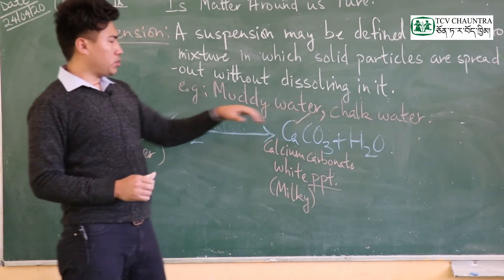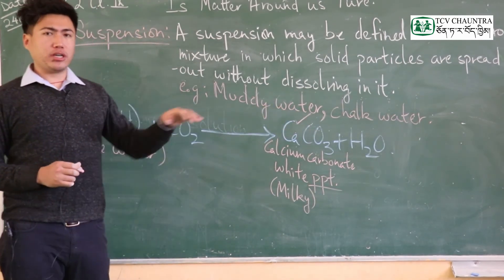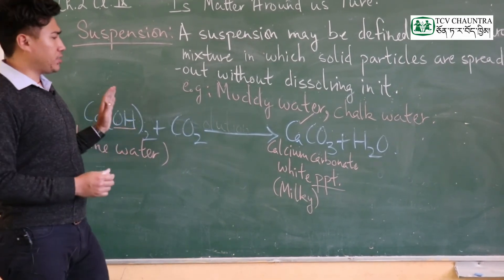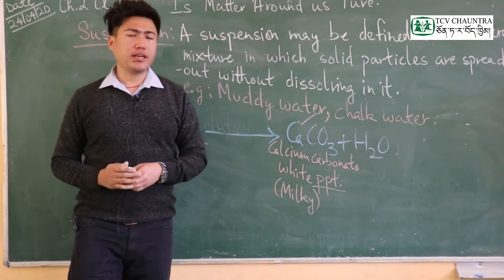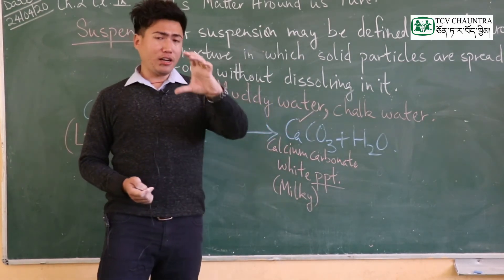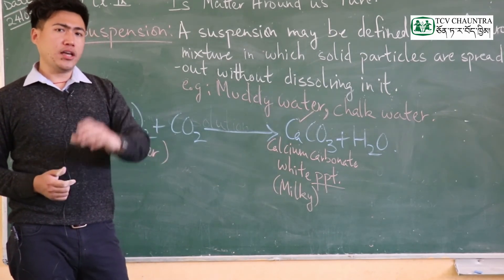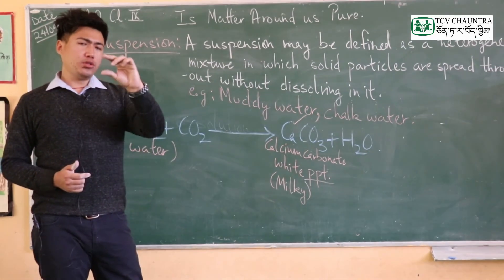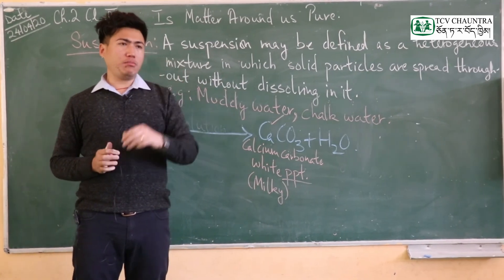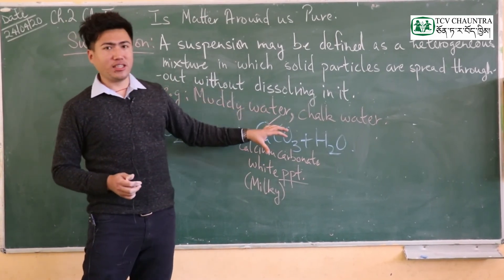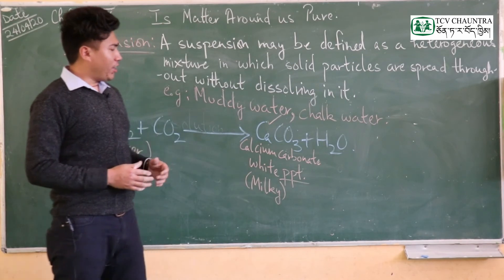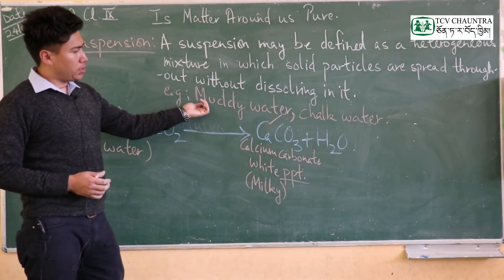The balanced equation for the reaction shows the balance of atoms. When calcium carbonate (CaCO3) is formed, this confirms the reaction took place. A suspension can be made, for example, with muddy water or chalk in water as examples.